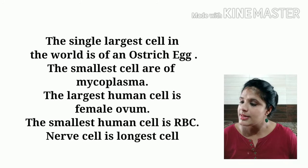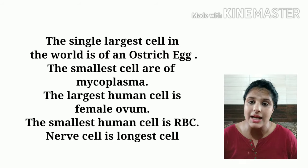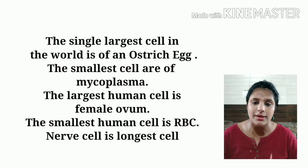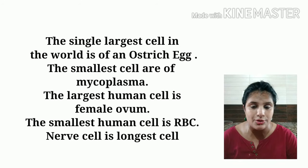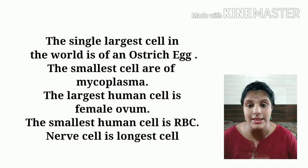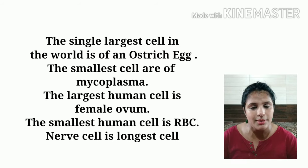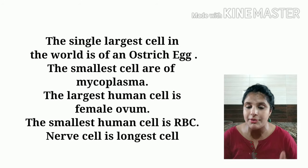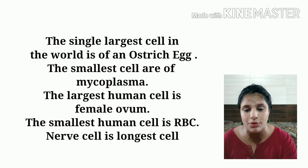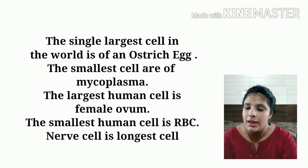The smallest cell in our body is the red blood cell (RBC). The largest cell in the female body is the ovum — the egg cell produced in females. The longest cell in our body is the nerve cell, because nerve cells must transmit messages from the brain all the way to the toes, so they are very long.